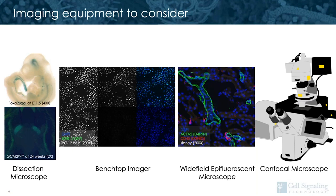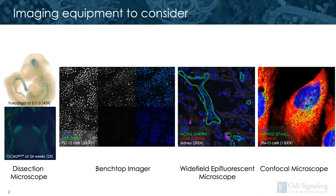Finally, on the right here, we have a scanning laser confocal microscope. I imagine that this is the piece of equipment many of you envision generating publication quality images on. Again, for this microscope class, many of the capabilities of this instrument will be determined by the features that are chosen during the purchase of this equipment.